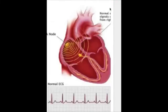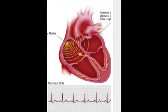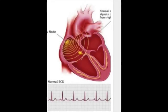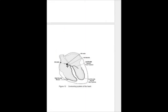From the SA node, the impulse goes to two points: number one, it directly stimulates the atria; and number two, the impulse goes from the SA node to the AV node, and from the AV node to the bundle of His to the ventricles. The AV node is the only connection between the atria and the ventricles for conduction of the impulse.